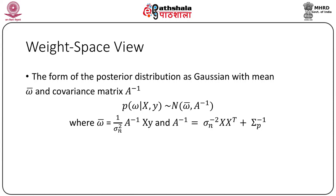From this joint distribution we can obtain the predictive equations for Gaussian process regression. The covariance functions we use will have some free parameters — for example, the squared exponential covariance function in one dimension involves parameters such as the length scale L, the signal variance, and the noise variance σ_n². In general we call these free parameters hyper-parameters.